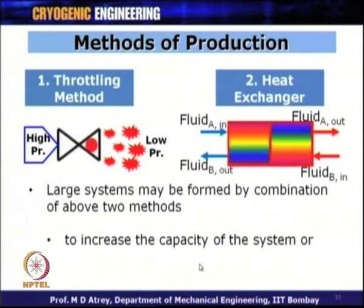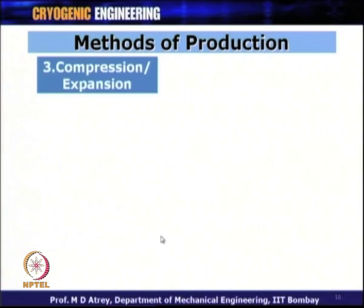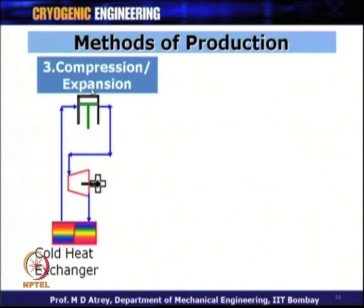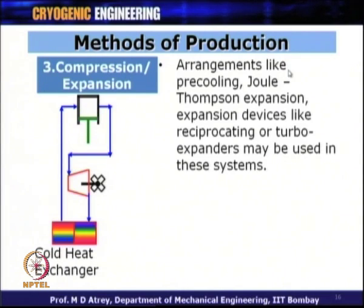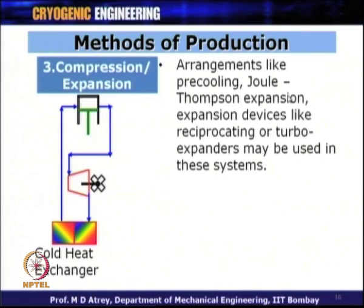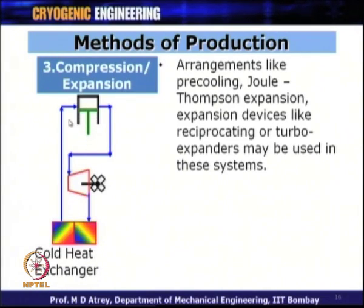Larger systems may combine multiple techniques — throttling, heat exchangers, and expansion devices — in the same circuit to increase capacity or reach very low temperatures. The third method is compression and expansion: gas is compressed to high pressure, then expanded in an expansion device to achieve lower temperature. This cold is then transferred via a heat exchanger. Arrangements like pre-cooling, Joule-Thompson expansion, and expansion devices such as reciprocating or turbo-expanders may all be used. COP and capacity can be improved by the proper choice of compressor, expansion device, and heat exchanger.